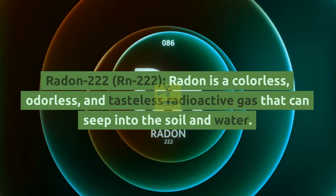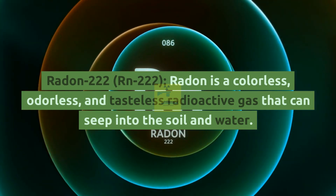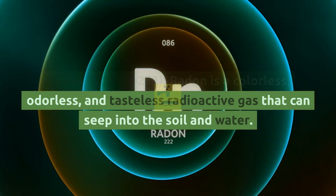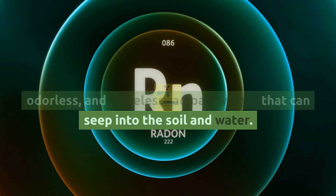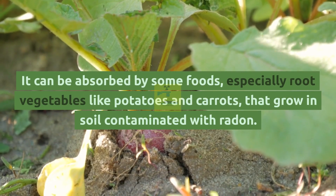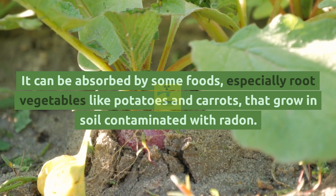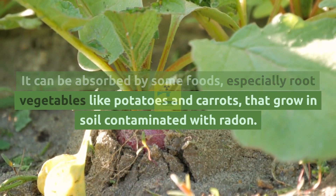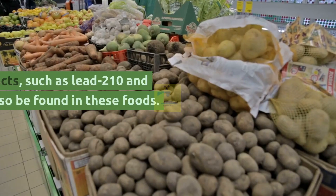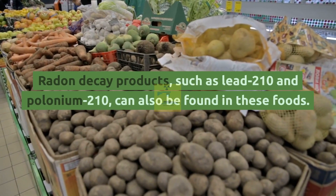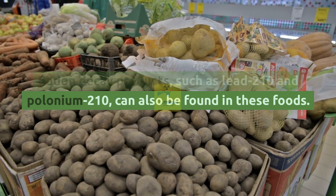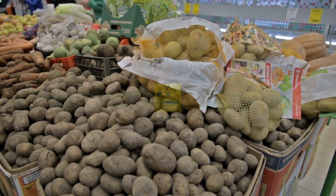Radon-222 (Rn-222): radon is a colorless, odorless, and tasteless radioactive gas that can seep into the soil and water. It can be absorbed by some foods, especially root vegetables like potatoes and carrots, that grow in soil contaminated with radon. Radon decay products, such as lead-210 and polonium-210, can also be found in these foods.